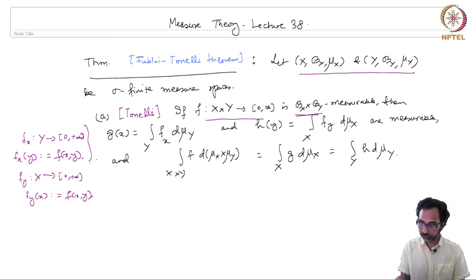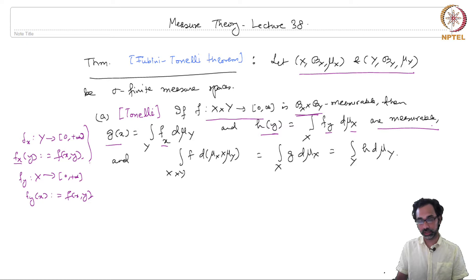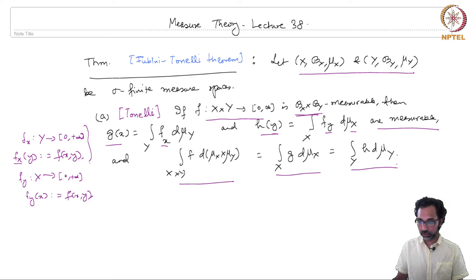The integral of f_x with respect to the measure mu_y is a function of x, and similarly the integral of f_y with respect to mu_x is a function of y. So these two functions g_x and h_y are measurable — this is the first assertion. Secondly, if you integrate f with respect to the product measure over the product space x cross y, this equals the integral of g with respect to mu_x, which equals the integral of h with respect to mu_y. This is Tonelli's theorem, valid for unsigned measurable functions in the product sigma algebra.